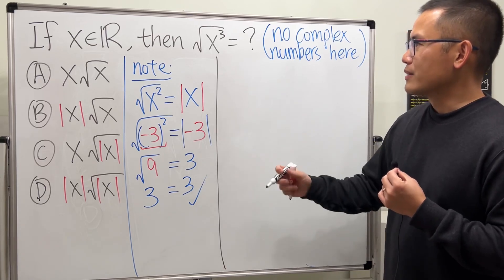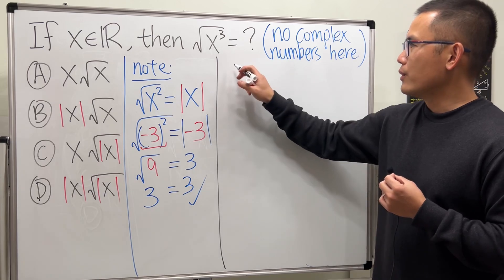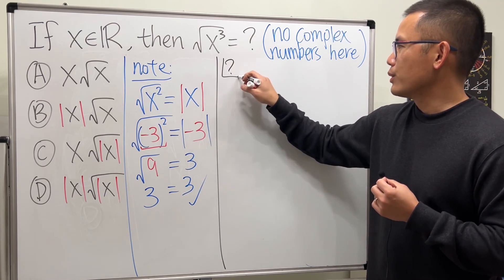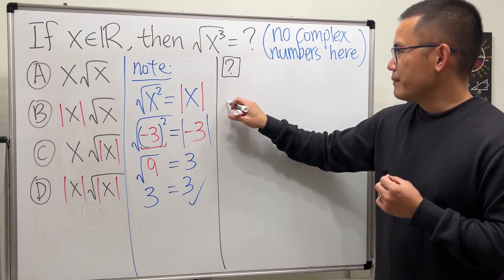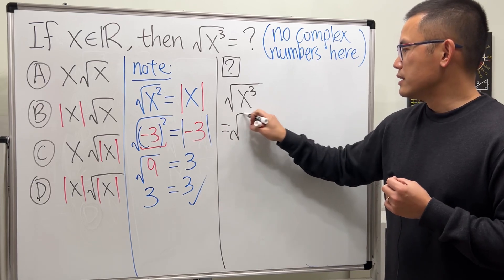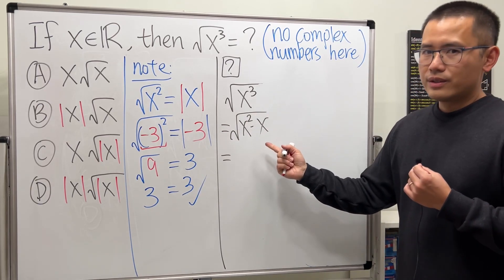So I just put on like a little question mark. Okay, square root of x to the third power. X to the third power is the same as x squared times x.